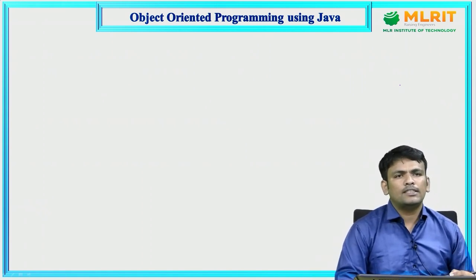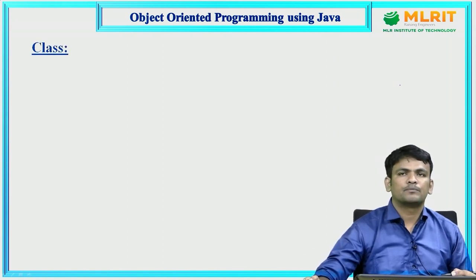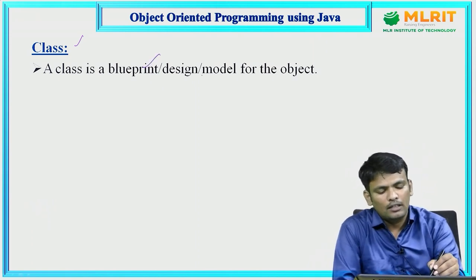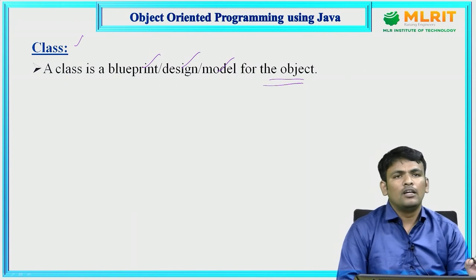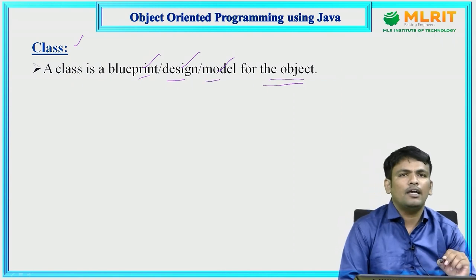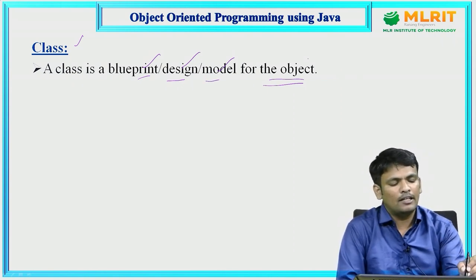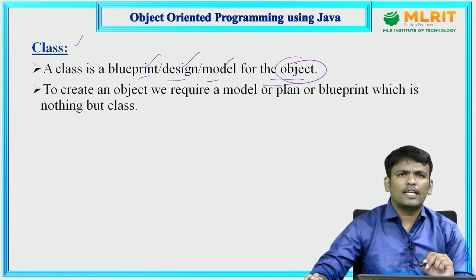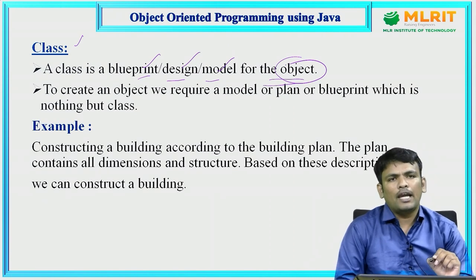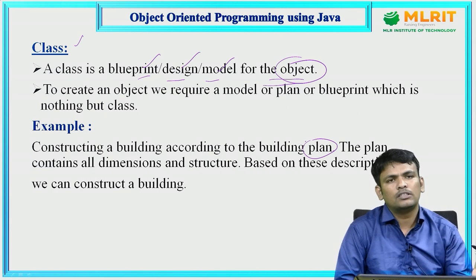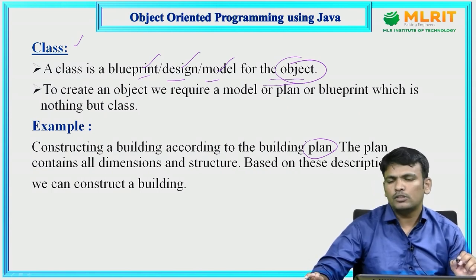In object-oriented programming, we use two basic terminologies: class and object. A class is nothing but a blueprint, design, or model for the object. If you want to create any object, you require a blueprint or design. Based on that model, you can build any object. For example, if you are constructing a house, you require a plan — the plan acts as the class, and the house is the object.